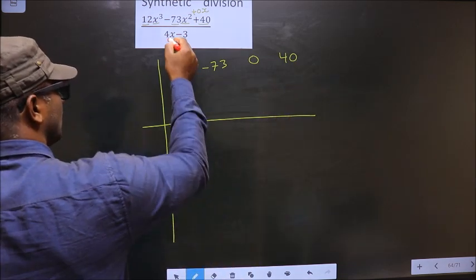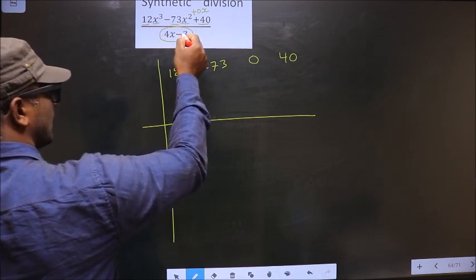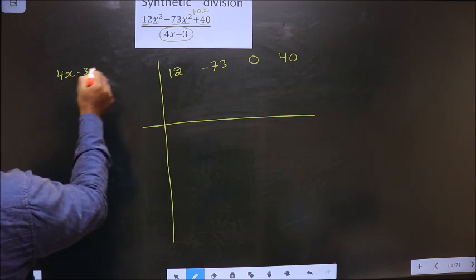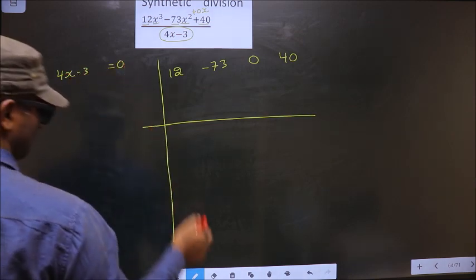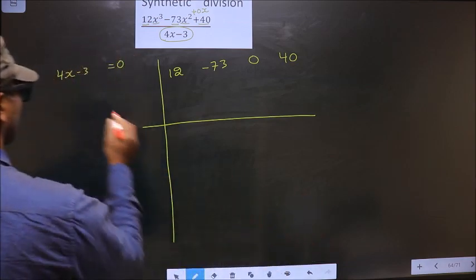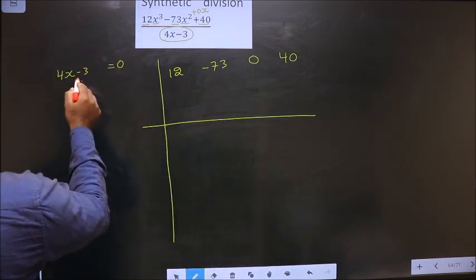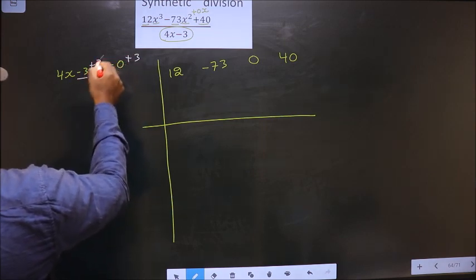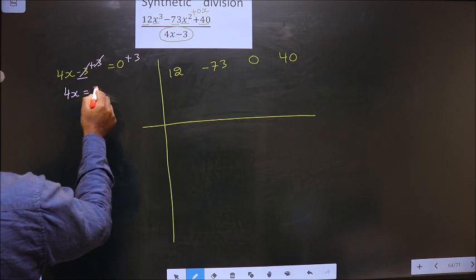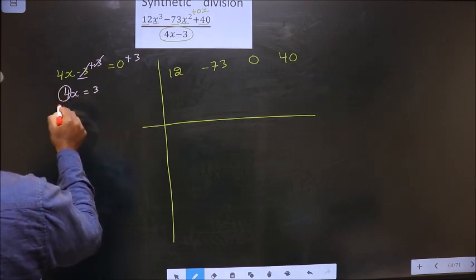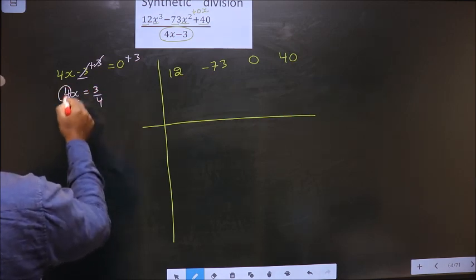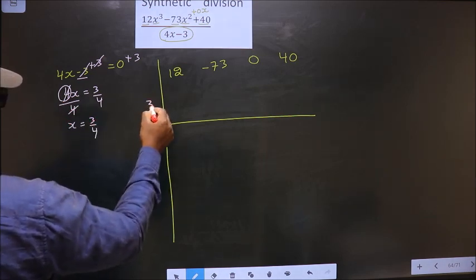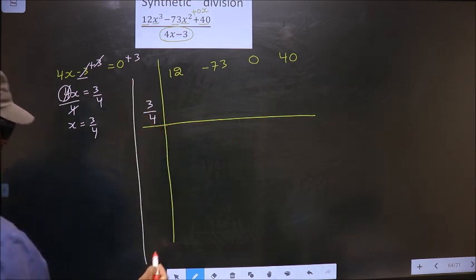Now you equate the denominator to 0 and get x value from it. That is 4x minus 3 equal to 0. To get x value from here, I should remove minus 3. So you add 3. This cancels out, you get 4x equal to 3. Now you should remove 4, so you divide by 4. You get x equal to 3 by 4. This you should write here.